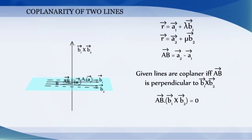Vector AB dot b1 vector cross b2 vector is equal to zero, or a2 vector minus a1 vector dot b1 cross b2 vector is equal to zero.